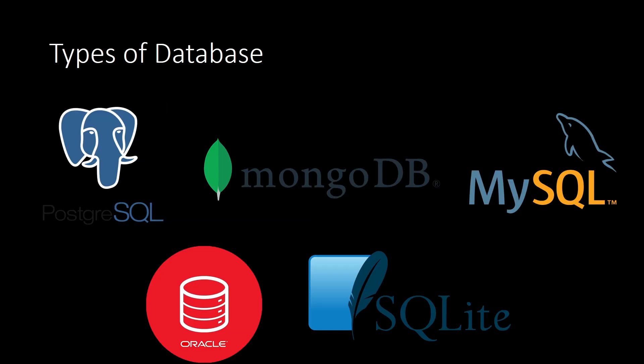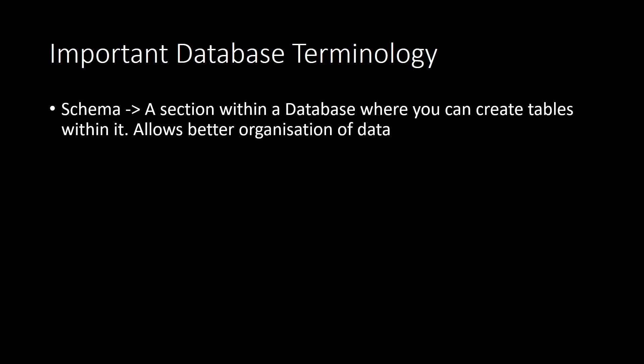So the hierarchy goes: database, then schema, then tables. Hopefully this gives you a better understanding of what a database actually is — it's not a table, but tables are stored within it. It's a massive collection of information with multiple schemas and multiple tables. Some database types you may have seen include MySQL, which is very popular, and PostgreSQL, which is also really good. Each type comes with its own features.